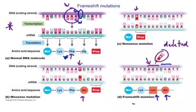The same thing occurs with an insertion or addition mutation. If you were to add or insert a base into the sequence, exactly the same thing would happen, except this would push all of the bases to the right. The same consequence applies: the codons are all disrupted, and therefore you end up with a whole set of different amino acids in the sequence, leading to a non-functional protein.